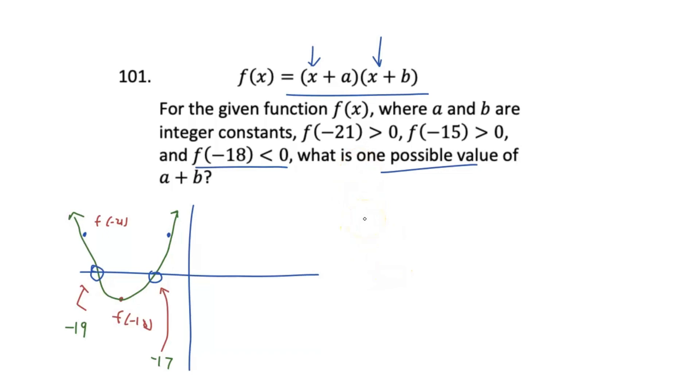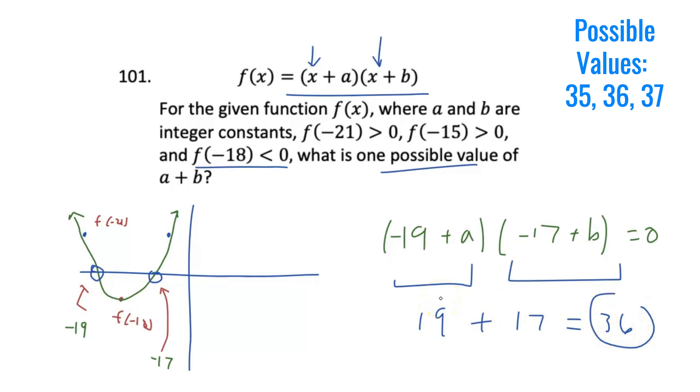So if we plug it back in, we have (x + a)(x + b). And so we can rewrite this with the roots. It would be (-19 + a) multiplied by (-17 + b). And then we can set this equal to zero for each of our solutions. And so this part right here, a will be equal to 19 and b will be equal to 17. And so 19 + 17 is equal to 36. And so that is one possible value of a + b. But there's obviously other possible values. I could have picked -20 and -16, et cetera.